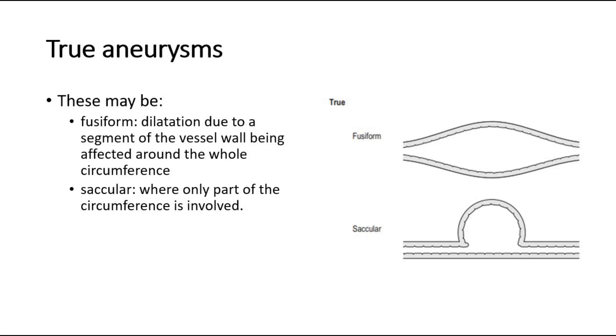For true aneurysms, these may be fusiform, where the dilatation is due to a segment of the vessel wall being affected around the whole circumference, or saccular, where only part of the circumference is involved.